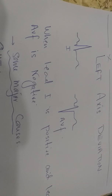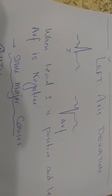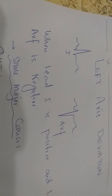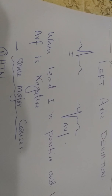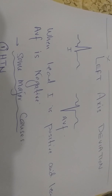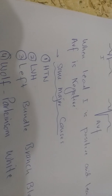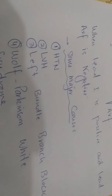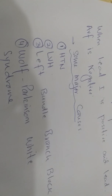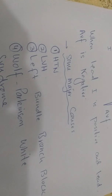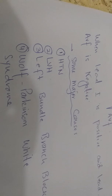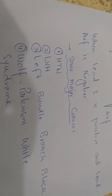In left axis deviation, Lead 1 is positive and Lead AVF is negative. Lead 1 has a tall R wave and very small S wave, while Lead AVF has a very small R wave and a deep S wave — meaning the wave of depolarization is moving towards Lead 1 and away from Lead AVF. A major cause, commonly seen in emergencies and ICUs, is long-standing hypertension.